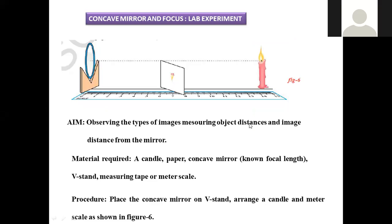This is the laboratory experiment to be discussed now: concave mirror and focus. What is the relation between the concave mirror and the focus? Focus is the minimum distance of the mirror which is placed between the object and the concave mirror, used to give the image in a clear way. To understand this, we are going to perform the laboratory experiment.